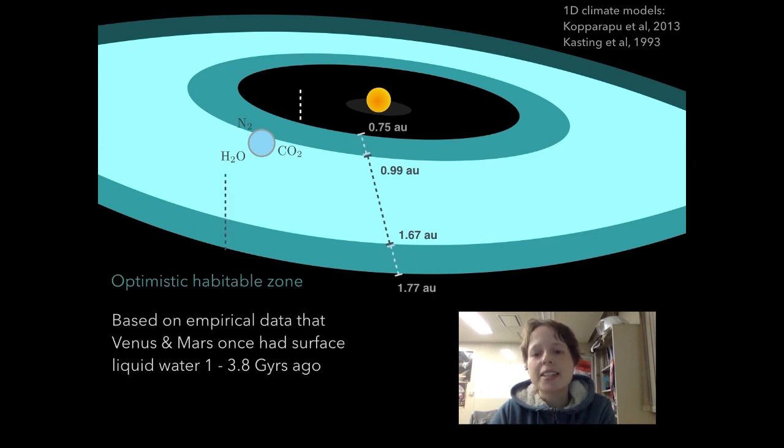A slight extension to this is known as the optimistic habitable zone, which can broaden these limits based on the idea that Venus and Mars probably have supported surface water in their past. So an Earth-like planet could have a period of habitability just outside the habitable zone edges.